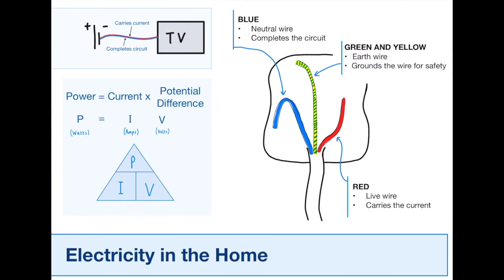Electricity in the home. The plugs are really important that you need to remember for this. A blue wire, the green and yellow wire, and the red wire. The red wire is a live wire. That's the one that carries the current, the electricity. The green and yellow wire is an earth wire, which will ground the electricity for safety. If the electrons kind of break out somewhere, then the green and yellow wire will take it down into the ground so people don't get electrocuted effectively. The blue wire is a neutral wire, which simply completes the circuit.